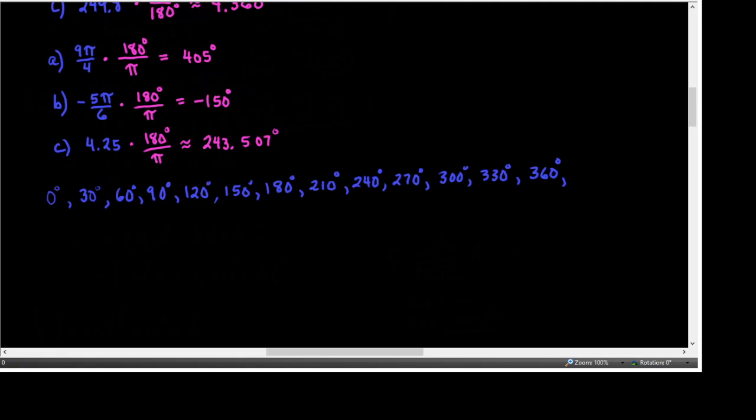Other special angles come from multiples of 45: 45, 90 (already listed), 135, 180 (already listed), 225, 270 (already listed), 315, and 360 (already listed). These are the important angle measures all the way around the circle.